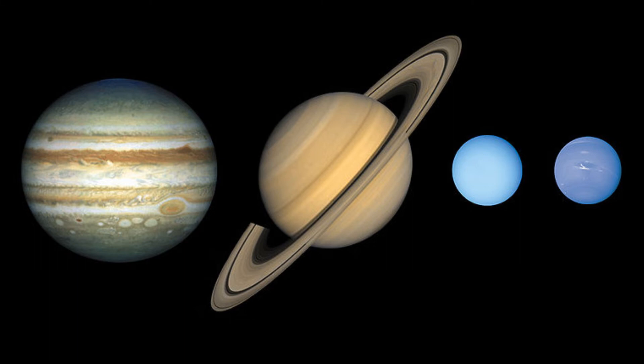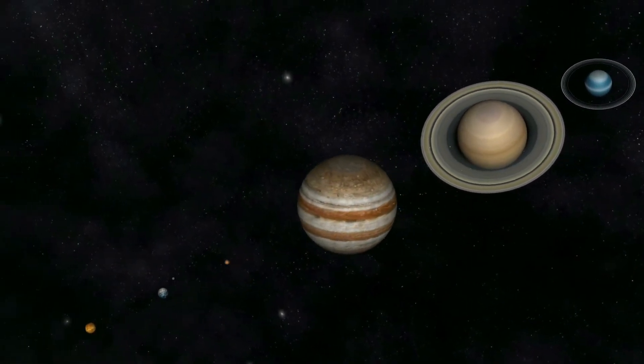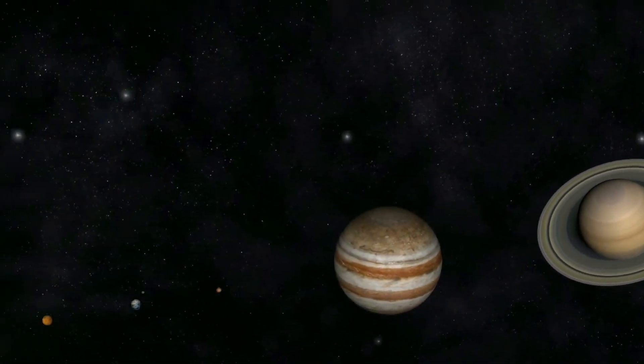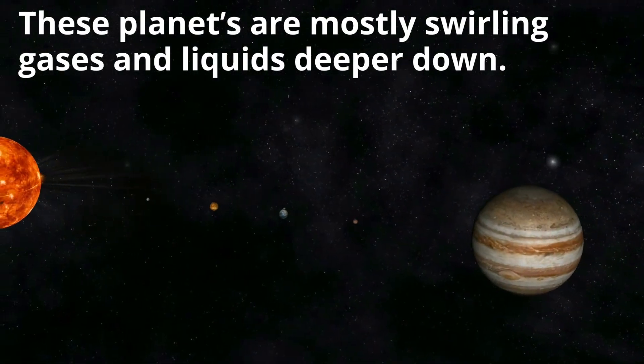Another strange feature about these planets is that they don't really have a true surface. They are composed of gases like hydrogen and helium and some methane. The planets are mostly swirling gases and then liquids deeper down.